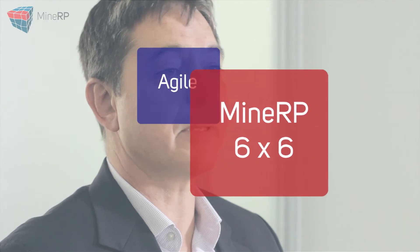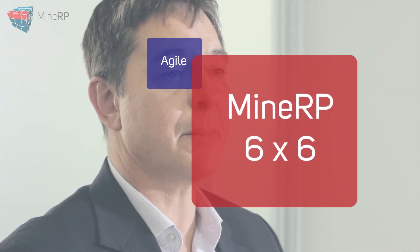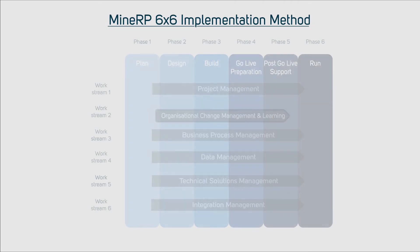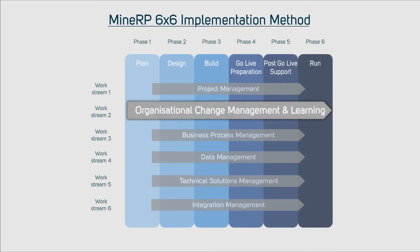For implementation projects, we blend the well-known agile method with the MinRP 6x6 implementation method. If I can stress one work stream which most implementations undervalue and under-scope, this would be the organizational change management and learning work stream.